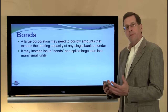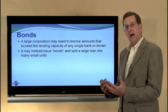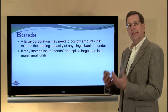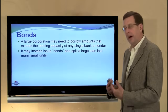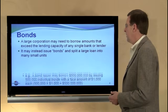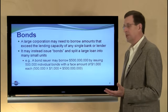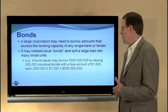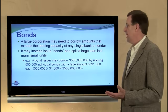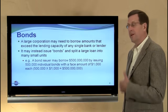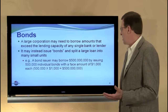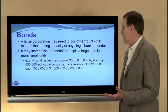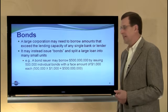Instead, the company issues bonds, enabling many different individual investors to buy bonds, or in essence loan money to the company through small units. For example, a bond issuer may borrow $500 million by issuing 500,000 individual $1,000 face amount bonds to raise the full $500 million amount.